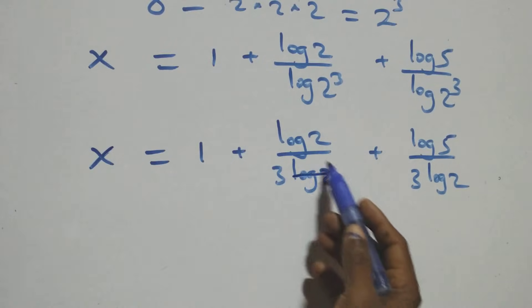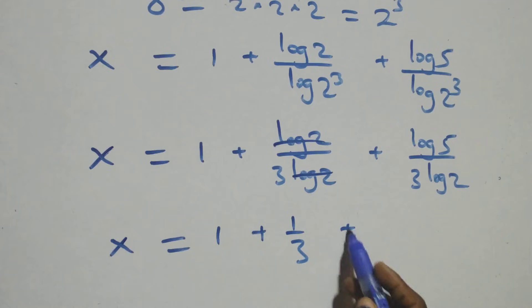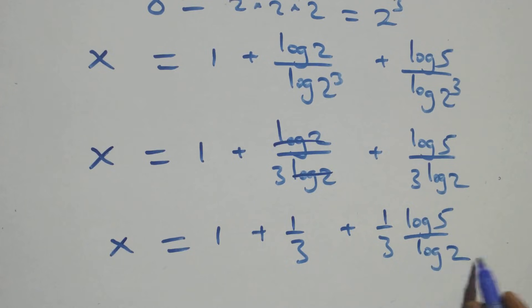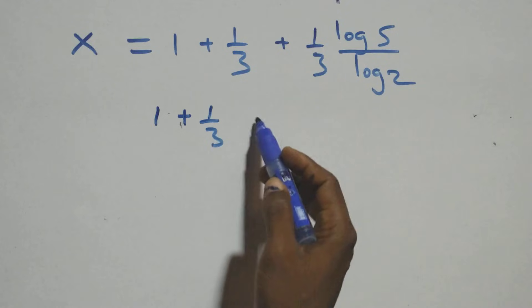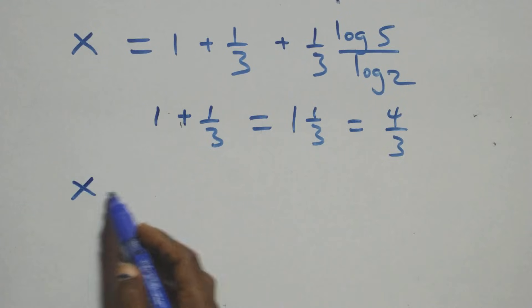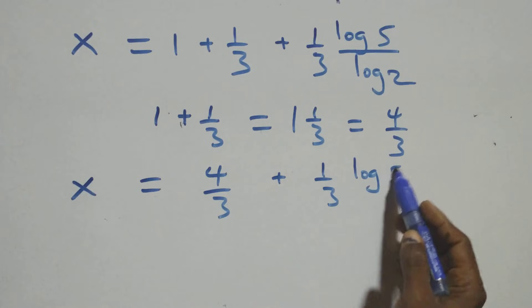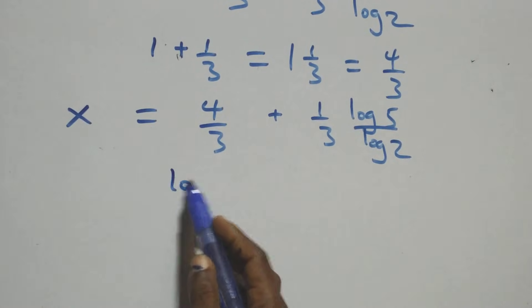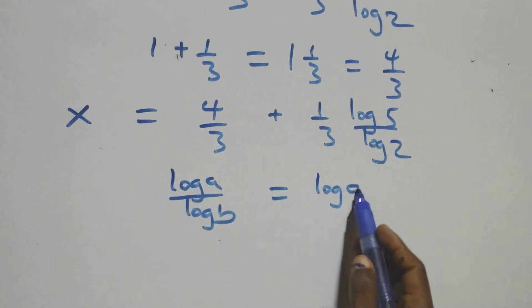Log 2 cancels with log 2 in the denominator, giving x equals to 1 plus 1/3 plus (1/3)·log 5 over log 2. We also apply the change of base rule: log a over log b can be written as log a to base b. So log 5 over log 2 becomes log base 2 of 5.